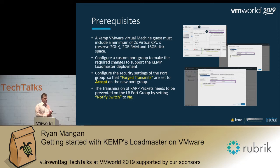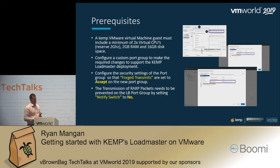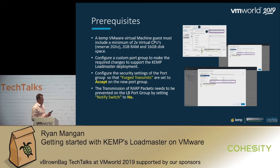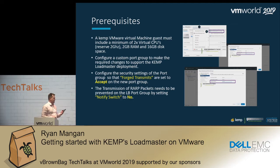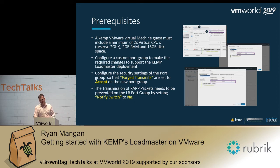Prerequisites for deploying Kemp within VMware: the virtual load master guest must include a minimum of two virtual CPUs, 2 GB RAM, and 16 GB disk space — more is better, but that's the minimum. You also need to configure a custom port group with the correct settings to support the Kemp Load Master — specifically configuring for promiscuous mode and forged transmits, with notify set off on the switch. The recommendation is to clone an existing port group, name it with an underscore LB suffix, and apply the required security settings.